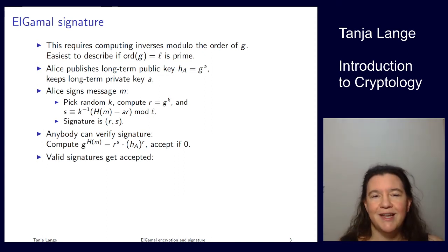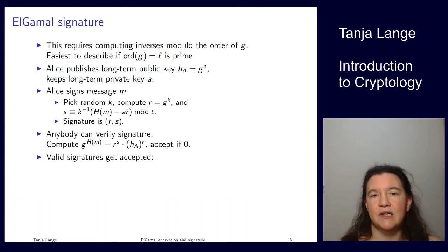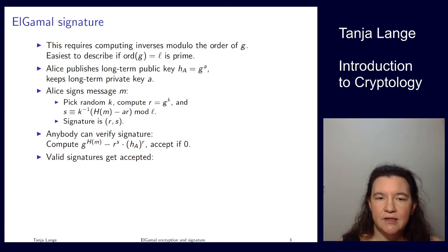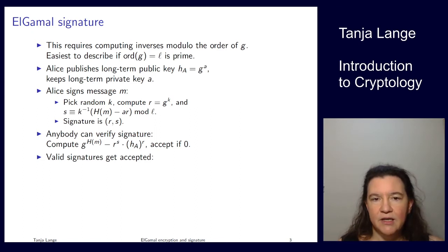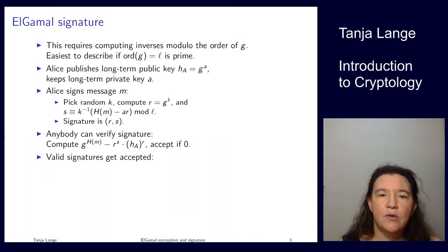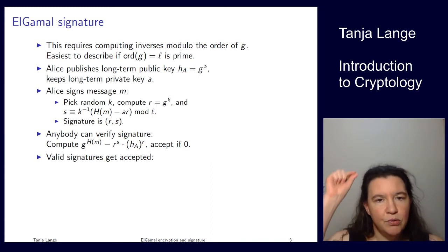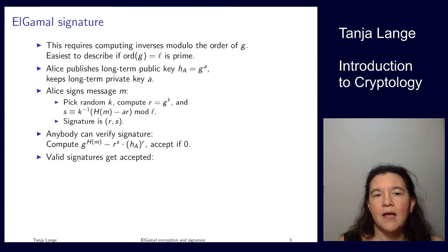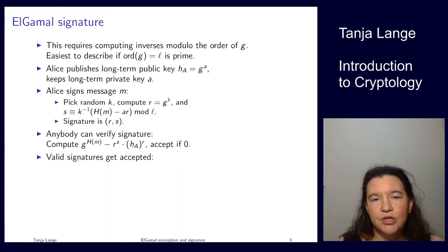Otherwise, signing starts the same way. Alice has a public/private key pair based on the discrete log problem: public key G^A, private key A. To sign a message, something involving Alice's secret A must appear. She picks a random K, computes R = G^K. K is an exponent, so it is naturally an integer mod L, and is invertible mod L unless it is zero. We compute the hash of the message, mapping to integers mod L, and A is also an exponent of G, so it is from the set of integers mod L.